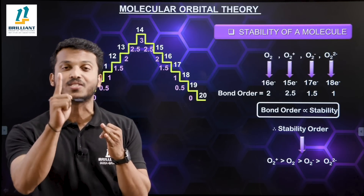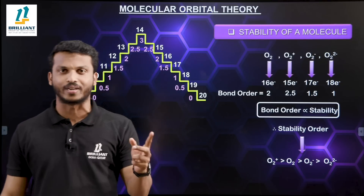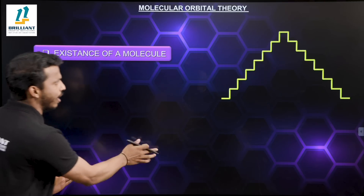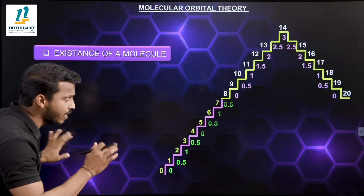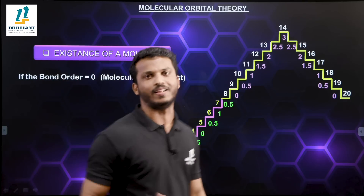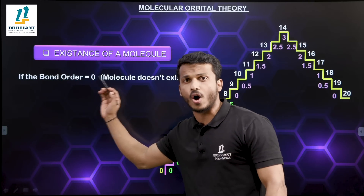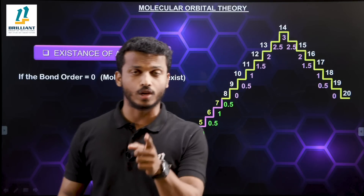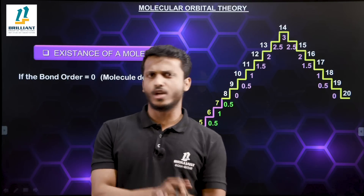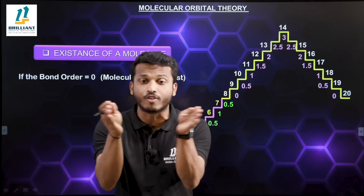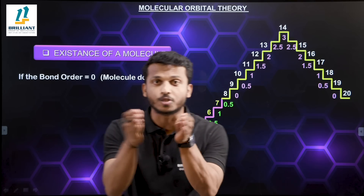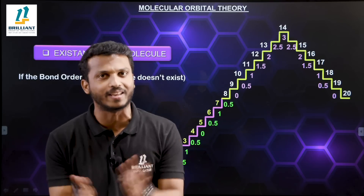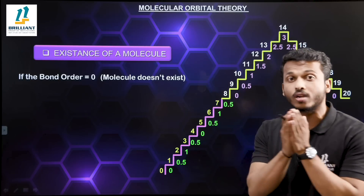The third application is determining the existence of a molecule. The key rule is: if the bond order is equal to zero, the molecule does not exist. Bond order zero means there is no bond between the two atoms, so they cannot form a stable molecule. If the bond order is greater than zero, the molecule can exist.